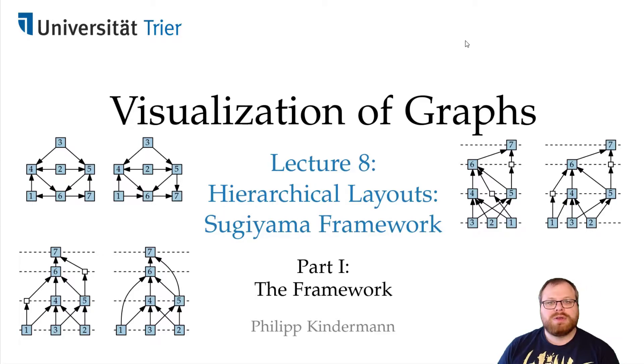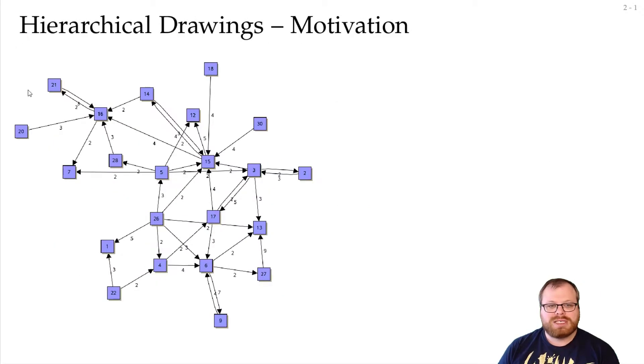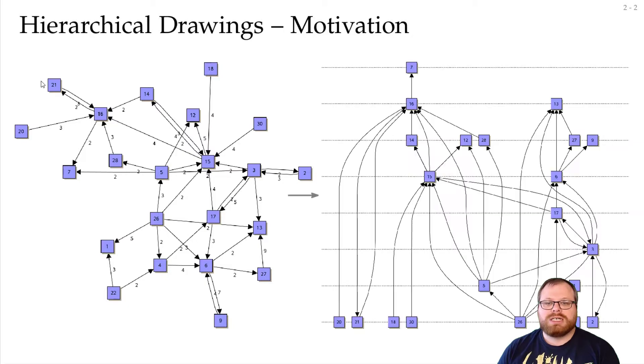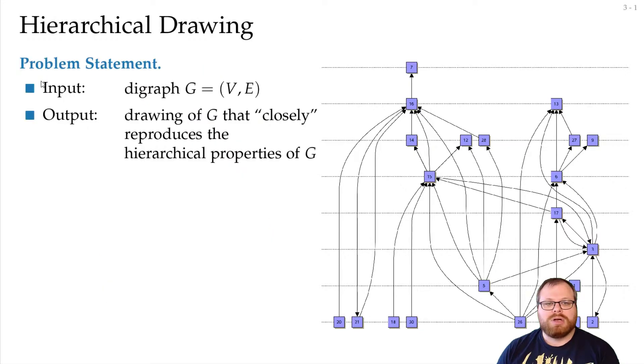In general, however, those don't exist. For example, if we look at this graph here, we might have edges that go in both directions, we might have cycles, and the graph might not be planar. Then we cannot get an upward planar drawing, but we still want to get a drawing that's as close to upward planar as possible. So in this framework, our input is a directed graph, and we want to get as output a drawing that closely reproduces the hierarchical properties of the graph.